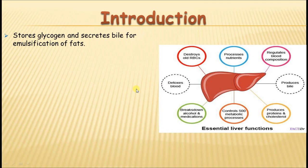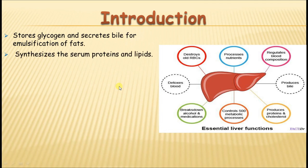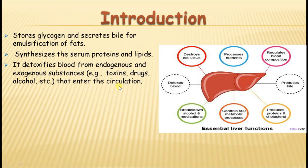It also deaminates amino acids in the urea cycle. It is responsible for the production of plasma proteins, serum proteins, and immunoglobulins. It is responsible for the conversion of tetraiodothyronine (T4) into triiodothyronine (T3). It destroys worn-out RBCs, and it also detoxifies alcohol, drugs, and toxic substances absorbed from the gut before they enter the circulation.